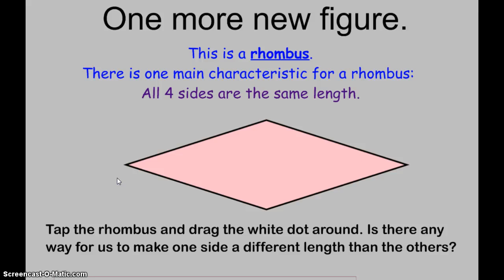The last shape that we're going to talk about is a rhombus. The only rule for a rhombus is that all four sides are the same length. So it looks like something we might call a diamond, but the actual name for it is a rhombus.